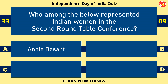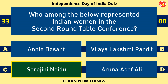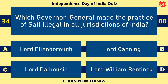Who among the below represented Indian women in the second Round Table Conference? Sarojini Naidu. Which Governor General made the practice of sati illegal in all jurisdictions of India? Lord William Bentinck.